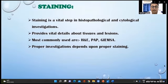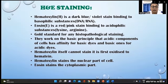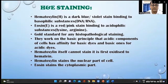Staining is a vital step in histopathological and cytological investigations, providing details about tissues and lesions. The most common staining mechanisms are H&E, PAP, and Giemsa. Hematoxylin and Eosin (H&E) — eosin is a red/pink stain binding to acidophilic substances like lysine and arginine — is the gold standard for histopathological staining. Acid components have affinity for basic dyes and vice versa. Hematoxylin stains the nuclear part while eosin stains the cytoplasmic part.